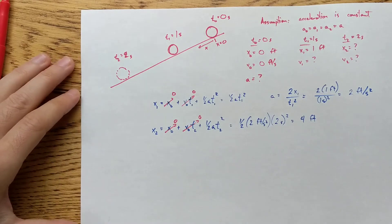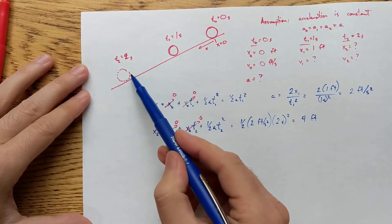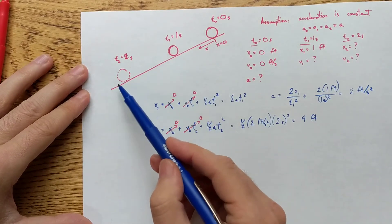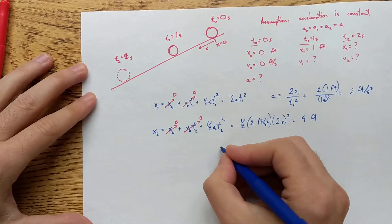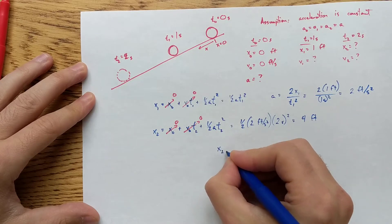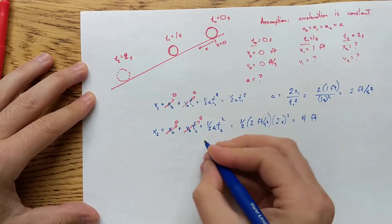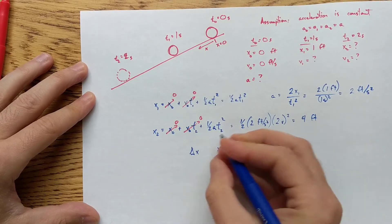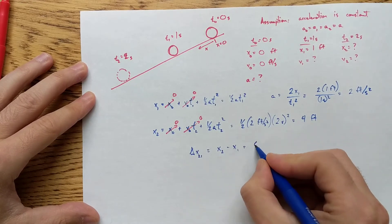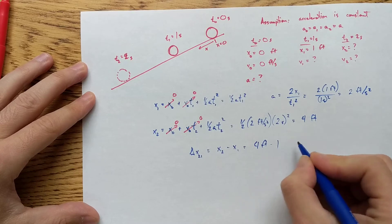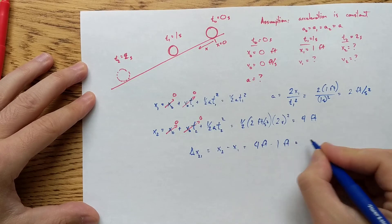Now that's not what the problem asks. It asks, what is the displacement during that second second? So its position is now at four feet. Its displacement is x2 minus x1. Delta x, two to one, is equal to x2 minus x1. That's four feet minus one foot, three feet.